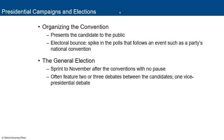Then you have the convention, which presents the candidate to the public. In 2020, conventions took place remotely, which was really strange. Electoral bounce is the spike in the polls that follows an event such as a party's national convention. The general election is the sprint to November after the conventions — from August/September all the way to November, about three months — featuring two or three debates between candidates and one vice presidential debate, usually sponsored by an independent election committee.